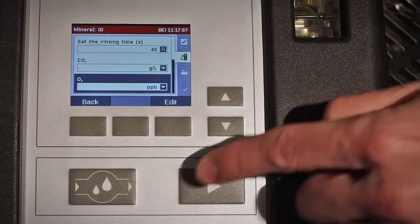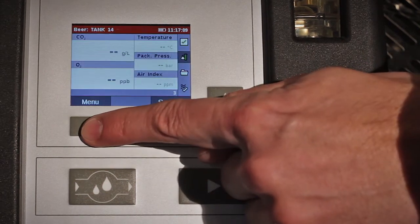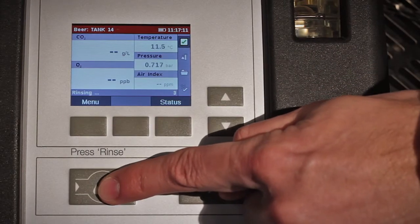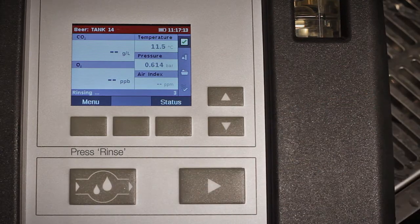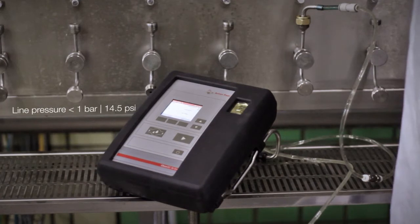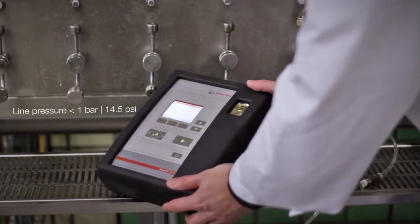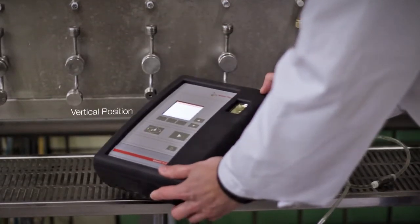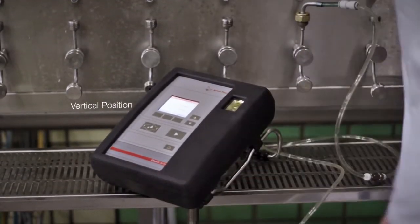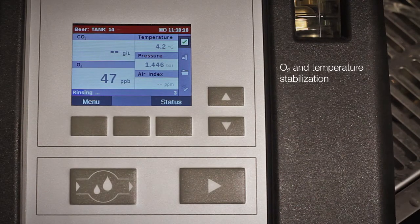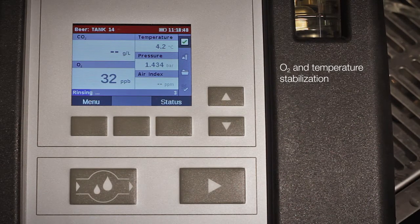Before the first measurement, perform a pre-rinsing process as follows. Open the sample valve at the line or tank and press the RINSE key. If the pressure level is lower than 1 bar or 14.5 PSI, position the instrument vertically to ensure bubble-free filling. Wait until the displayed oxygen and temperature values are stable.